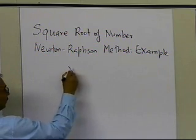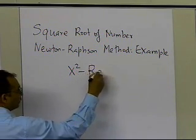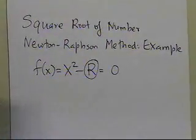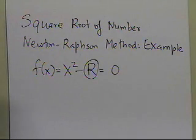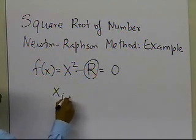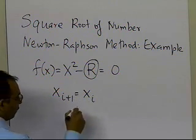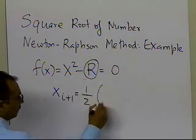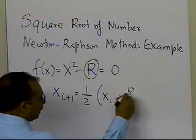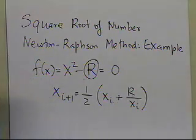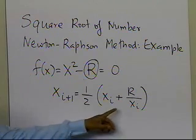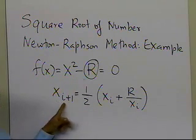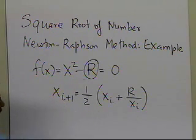The way we derive the Newton-Raphson method formula — which is in the other segment — is that we start with the equation f(x) = x² − r. We're trying to find the square root of r by solving x² − r = 0, and the recursive formula turns out to be: x_{i+1} = ½ (x_i + r / x_i). We start with some initial guess and continue this process until our result for the square root of r is acceptable.